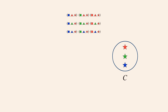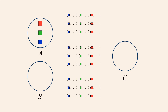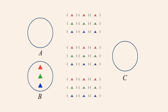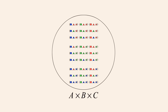We then repeat this, each time choosing a different element from C. When we have done this for every element of C, every possible ordered triple will have been formed whose first element is from set A, second element from set B, and third element from set C. These ordered triples form the Cartesian product of A, B, and C.